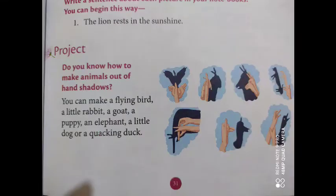Now the last task is the project. Do you know how to make animals out of hand shadows? You can make a flying bird, a little rabbit, a goat, a puppy, an elephant, a little dog, or a ducking duck. Try to do this at home.